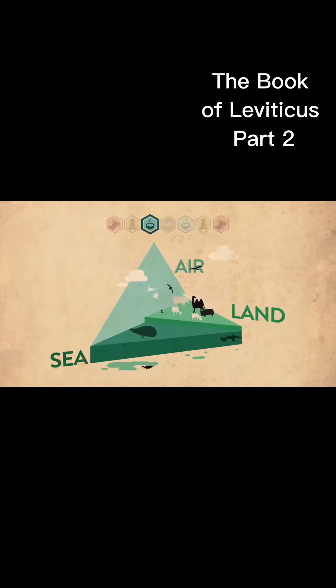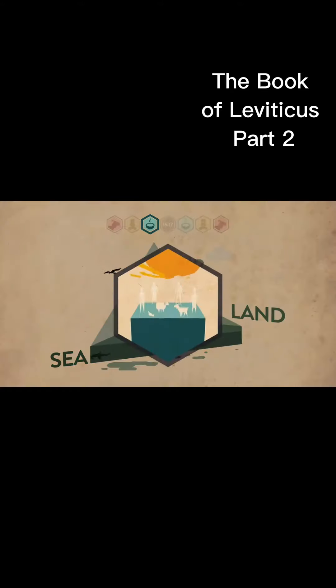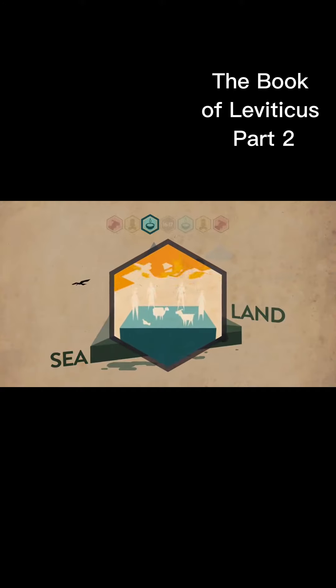The text is not clear about why certain animals are impure or why touching or eating them makes you impure. What is clear, however, is that avoiding these creatures will set Israel apart and remind them that God's own holiness should affect every part of their lives, including what they eat.